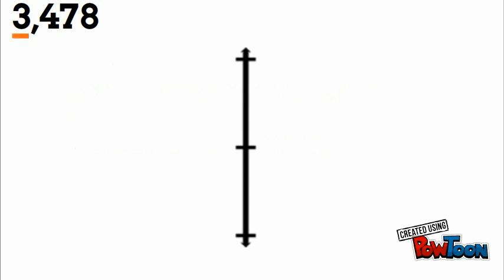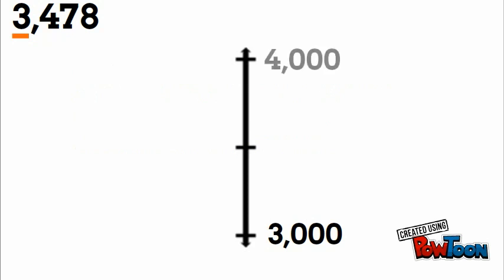We look at the thousands place — it's at three. Our lower estimate will always be what's already there, so three thousand. Our upper estimate is one more thousand, so four thousand. The midpoint will always be with a five.